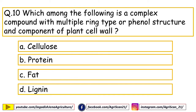Next question: which among the following is a complex compound with multiple ring-type or phenol structure and a component of plant cell wall? Options are cellulose, protein, fat, lignin. The right answer is lignin.